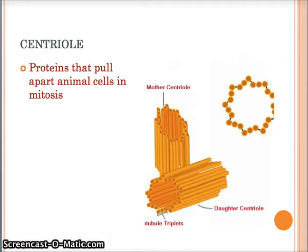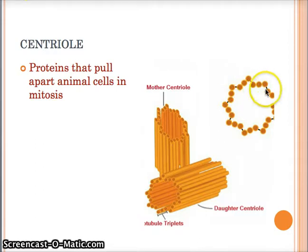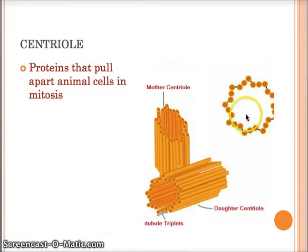Next we've got a centriole. A centriole is a protein that pulls apart animal cells in anaphase during mitosis. They kind of look like the star of David. So if you see a star-looking thing on a test, that's going to be the centriole.